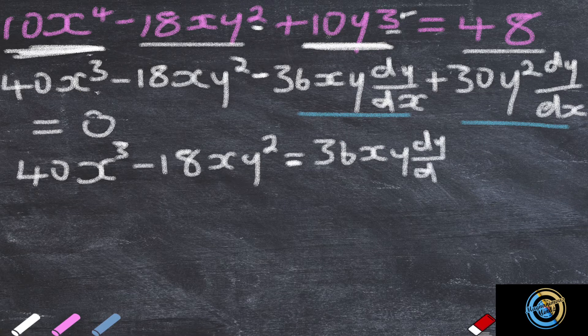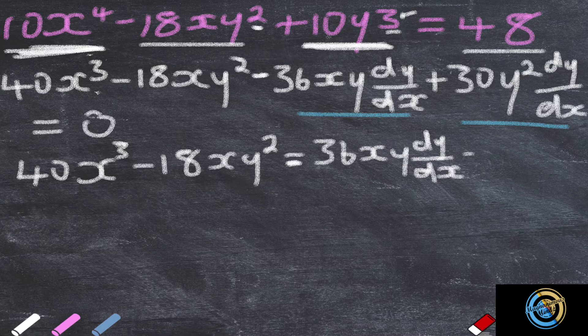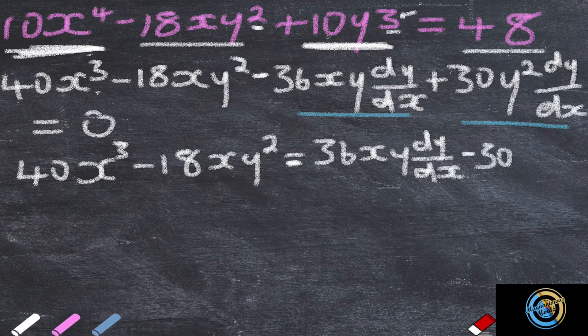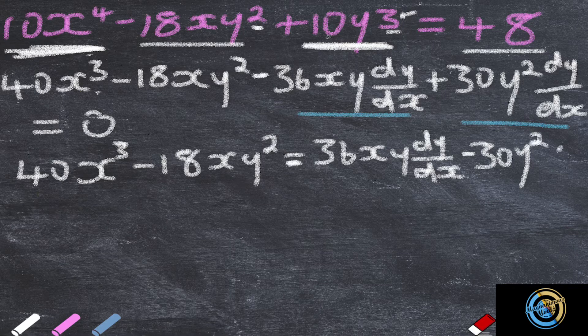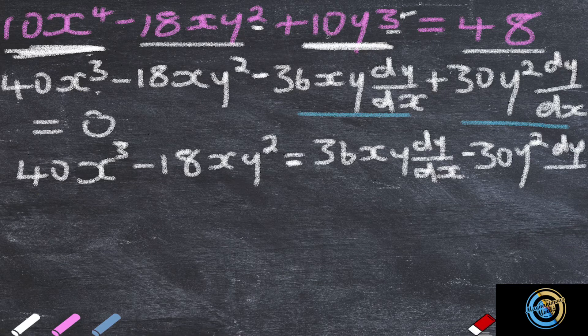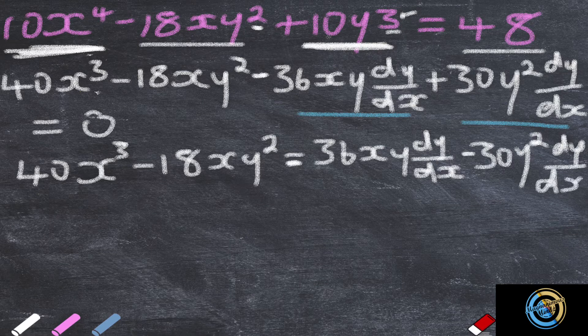Minus 30y squared dy over dx. And then this side we are going to factor out dy dx.